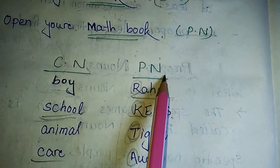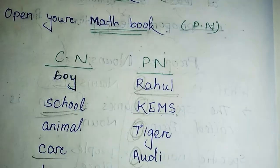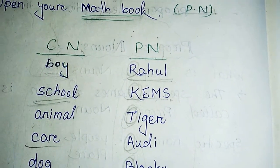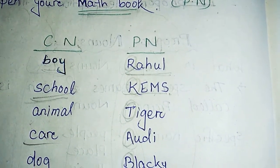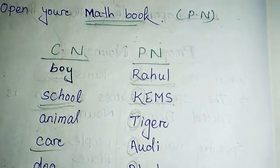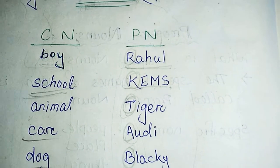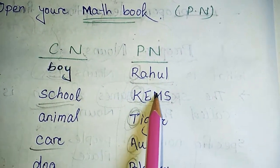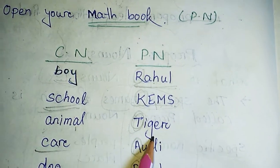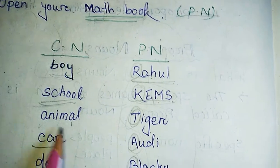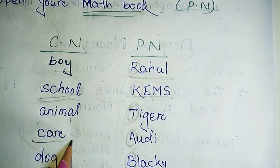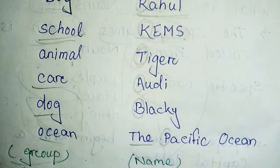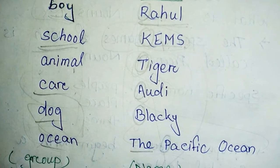CN means common noun and PN means proper noun. If I say 'boy,' many boys will pay attention. But if I say 'Rahul,' then only the boy named Rahul will pay attention. So 'boy' is the common noun and 'Rahul' is the proper noun. Like this: school — and here comes the particular name of a school. Animal — here tiger. Car — here Audi, a particular name of a car. Dog — here Blackie. Ocean — one particular name of the ocean.